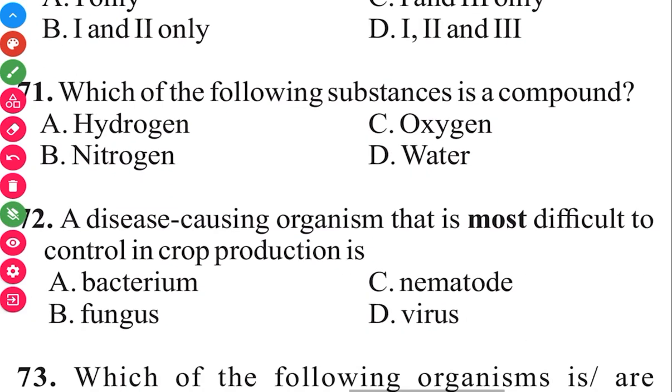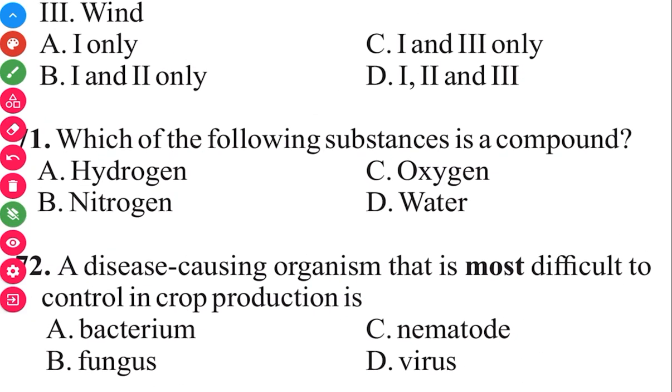Question 72. A disease-causing organism that is most difficult to control in crop production is virus. The answer is D.